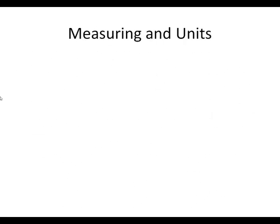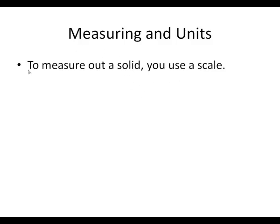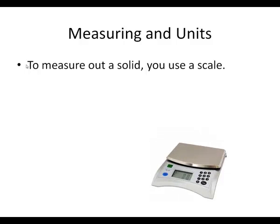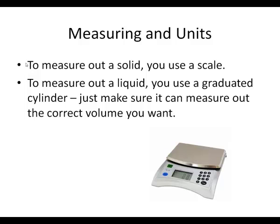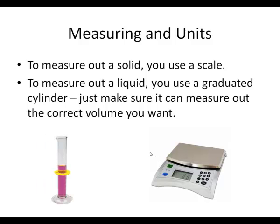When measuring in units, you want to use a scale to measure out a solid — there's what an electronic scale looks like. To measure out a liquid, you want to use a graduated cylinder. Make sure it can measure the correct volume you need — it won't do much good to measure out 100 milliliters with a graduated cylinder that only goes up to 50.